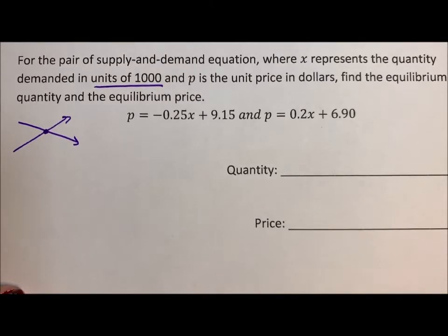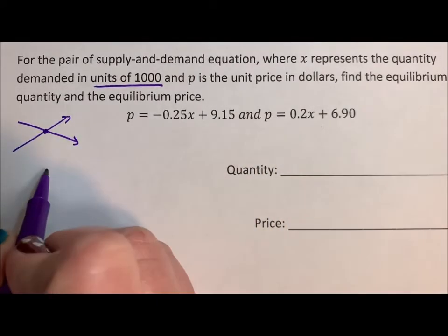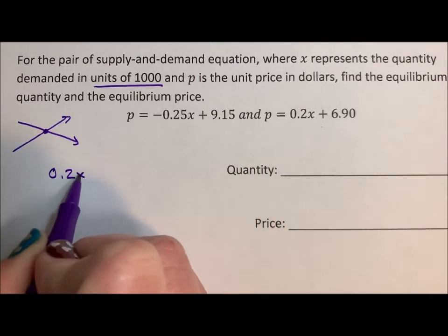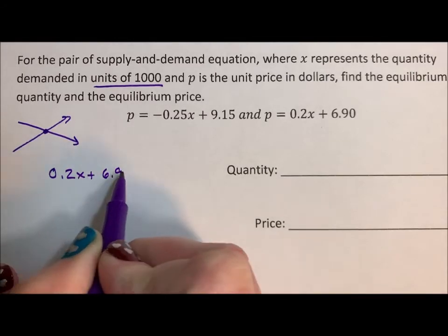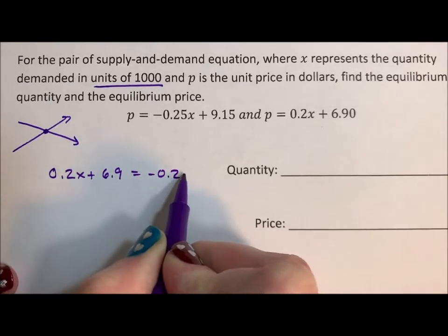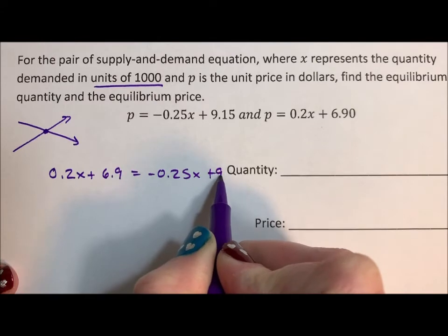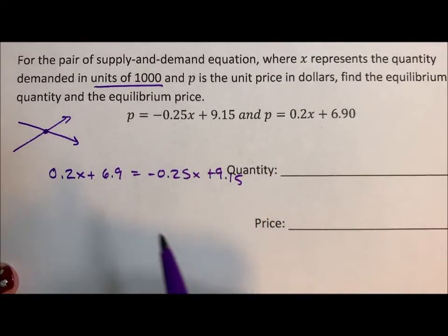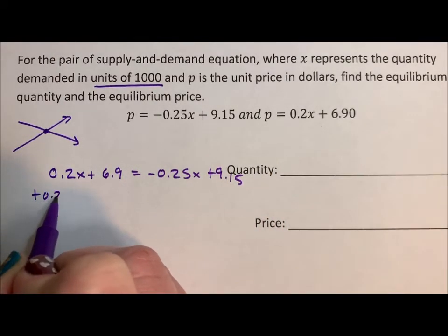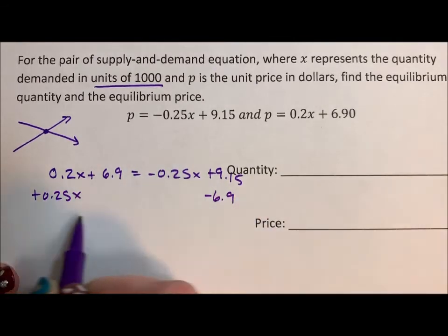So what we do is we take our supply and our demand and we set them equal to each other. So we take 0.2x plus 6.9, set that equal to negative 0.25x plus 9.15. I'm going to add the 0.25x over and subtract the 6.9.